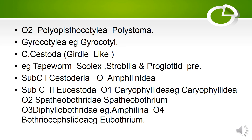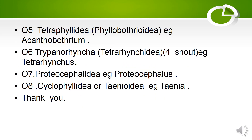Order 3: Diphyllobothriidea — example: Amphilina. Order 4: Bothriocephalidea — example: Bothridium. Order 5: Tetraphyllidea — example: Acanthobothridium. Order 6: Trypanorhyncha — example: Tetrarhynchus. Order 7: Proteocephalidea — example: Proteocephalus. Order 8: Cyclophyllidea — example: Taenia.